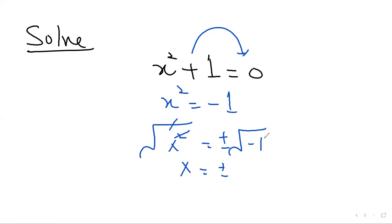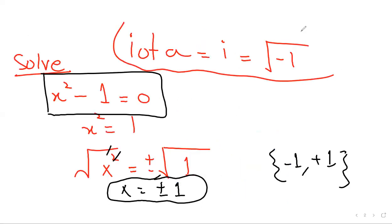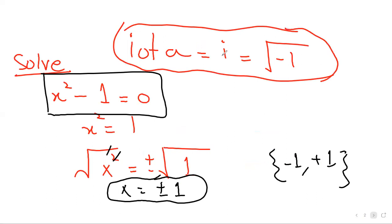But we know that whenever we have negative sign in the radical, this plus 1 root is always 1 and under root of minus 1, as I have explained you, this is the mathematical form according to the mathematicians, which is always equal to iota.